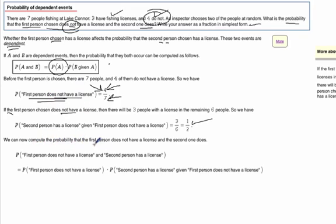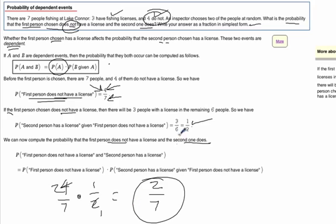So now we can compute the probability that the first person does not have a license and the second one does by multiplying those two together. We've got four sevenths times one half. We can cross cancel, and our final answer is two sevenths. So there's two out of seven chance that the first person does not and the second person does have a license.